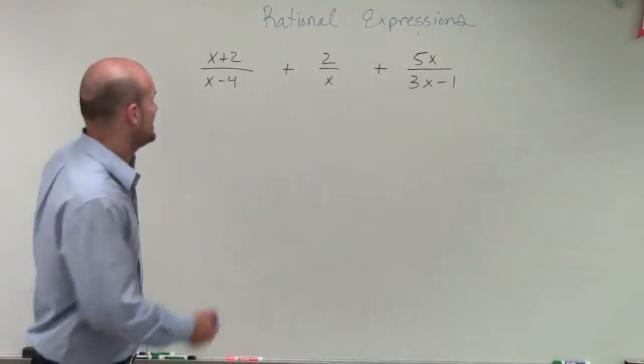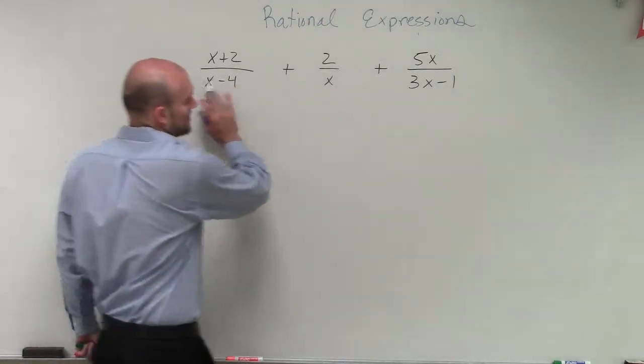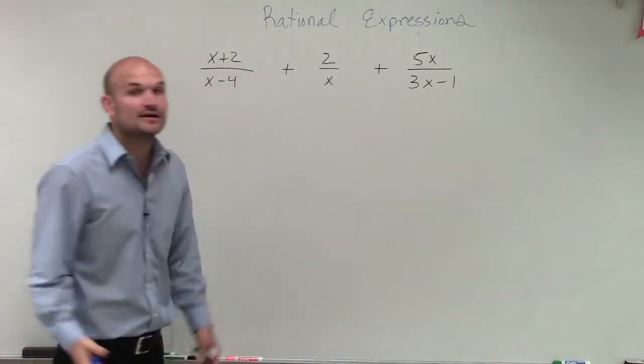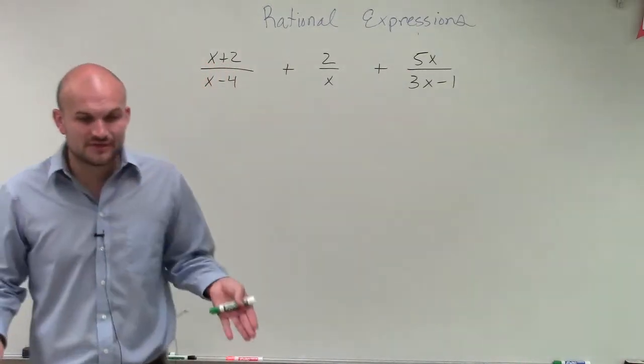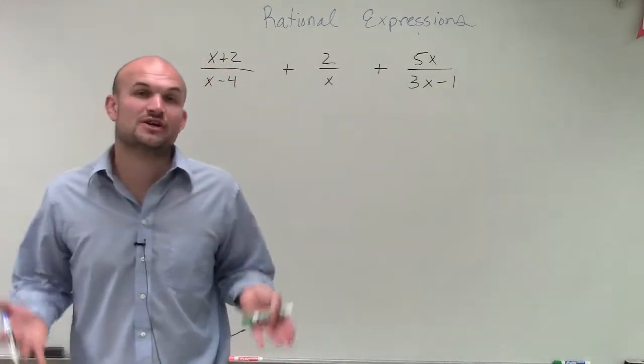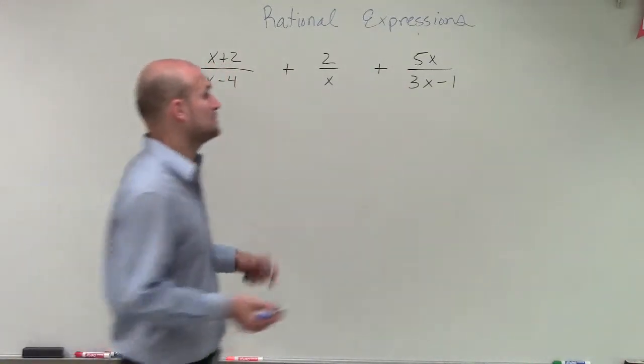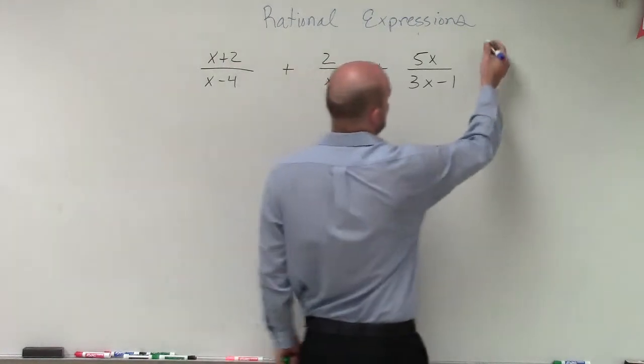You can see that each one of my rational expressions all have a different denominator. Whenever I have different denominators, I need to make sure I find a common denominator, which we call our least common denominator.